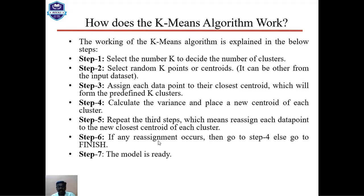Step 4: calculate the variance and place a new centroid for each cluster. Step 5: repeat Step 3 — reassign each data point to the new closest centroid of each cluster. Step 6: if any reassignment occurs, go back to Step 4; otherwise, go to finish. Step 7: the model is ready.